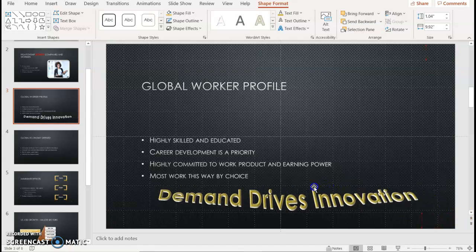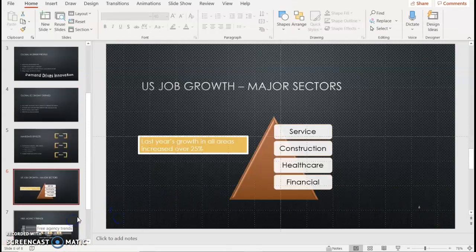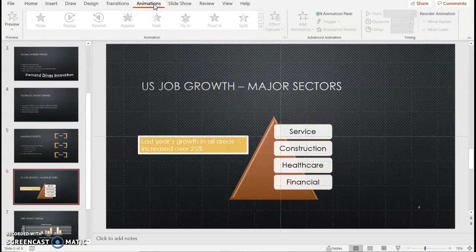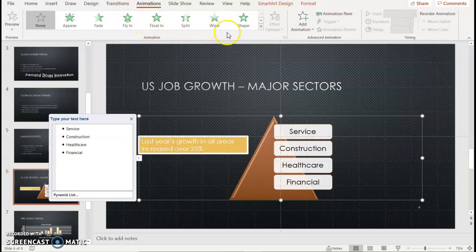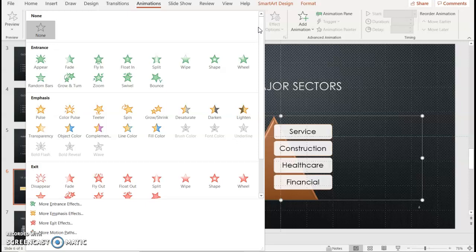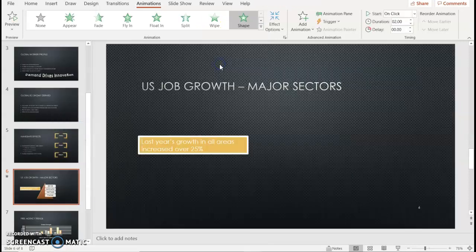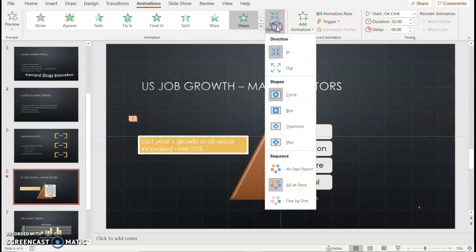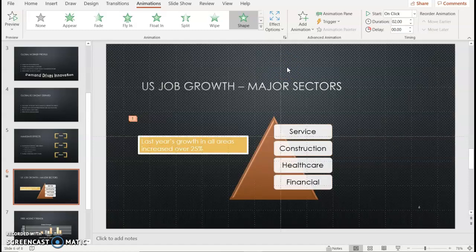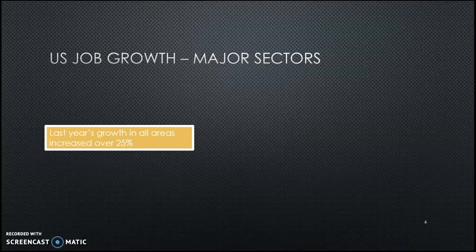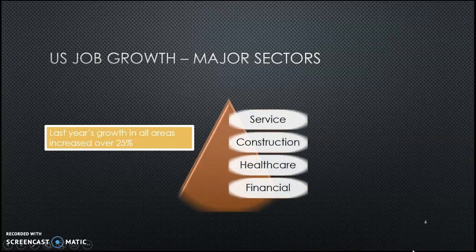Click Slide 6 and choose the Animation tab. Select the SmartArt object — right now you can't activate any animation if nothing is selected. Select the SmartArt and choose the animation by clicking the down arrow for more. Choose Shape in the Entrance section. Under Effects Options, choose All at Once, then choose Out for the effect direction. Click the Slideshow button on the status bar at the bottom to get a preview — click your mouse to see what it looks like, then press Escape.